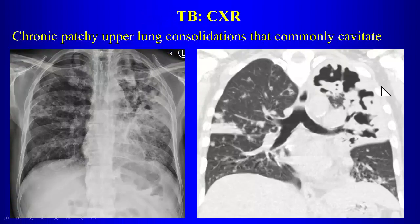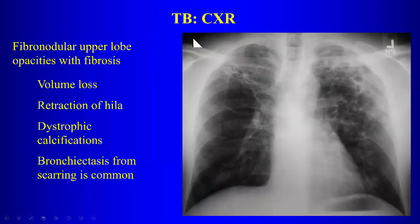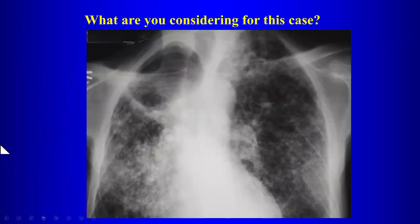Fibrocavitary disease with cavitation is a very typical appearance for tuberculosis. If you see this in an ER patient, the first thing you're going to do is call and tell them to isolate the patient — we're worried about active tuberculosis, and this patient is contagious. We see cavitary changes, volume loss, retraction of the hilum, dystrophic calcification, and traction bronchiectasis from scarring.